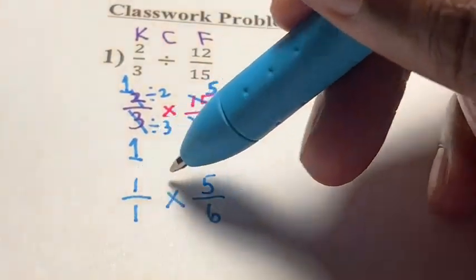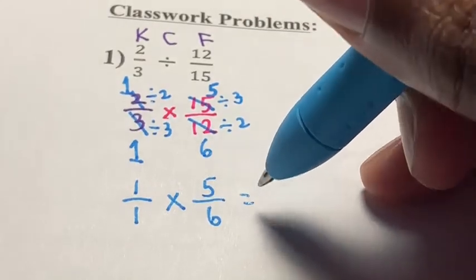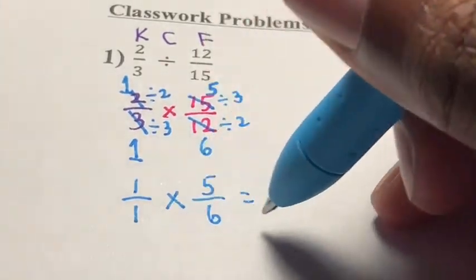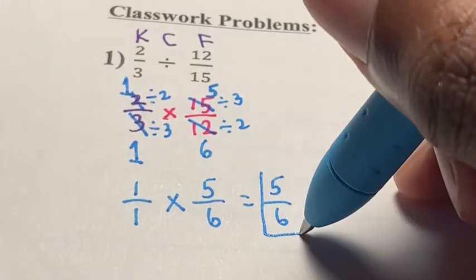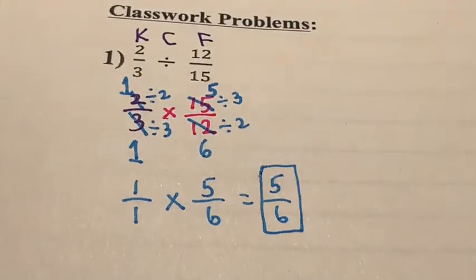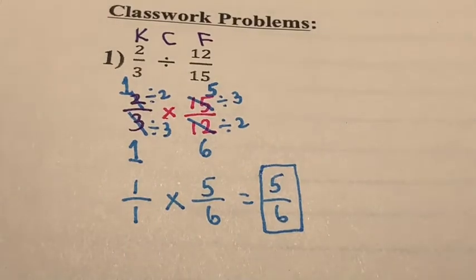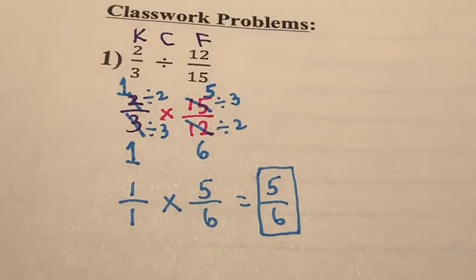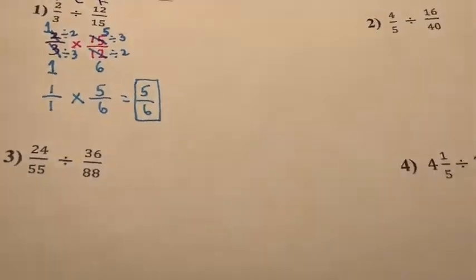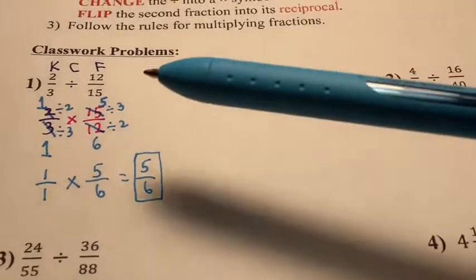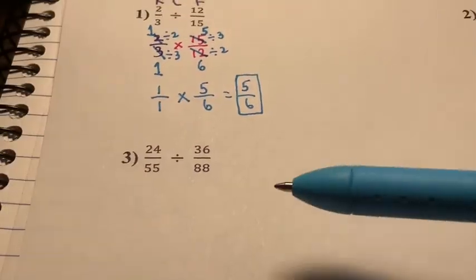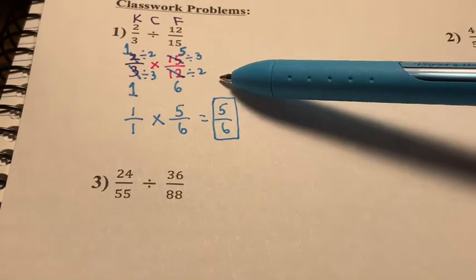Now let's multiply straight across: we have 1 times 5, which is 5, and 1 times 6, which is 6. The final answer is 5 over 6. I'm going to leave number 2 for you to do because it's very similar to number 1. Number 3 is also very similar to number 1 — just remember to write KCF first.